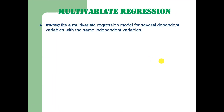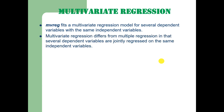The Stata command for multivariate regression is mvreg, which fits a multivariate regression model for several independent variables at the same time with the same independent variables on the left-hand side. Multivariate regression is different from multiple linear regression in that several dependent variables are simultaneously regressed on the same independent variables.